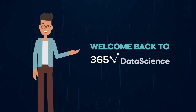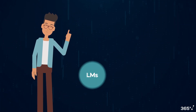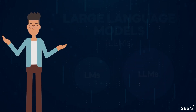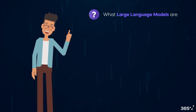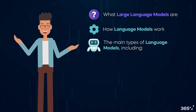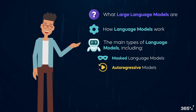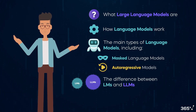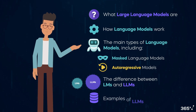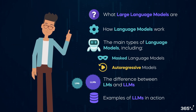Hi there, and welcome back to 365 Data Science. In today's video, we'll explore Large Language Models, or LLMs. We'll cover what Large Language Models are, how language models work, and the main types of language models, including masked language models and autoregressive models. Then we'll look at the difference between language models and large language models, and finally examine some examples of LLMs in action. Let's dive in!